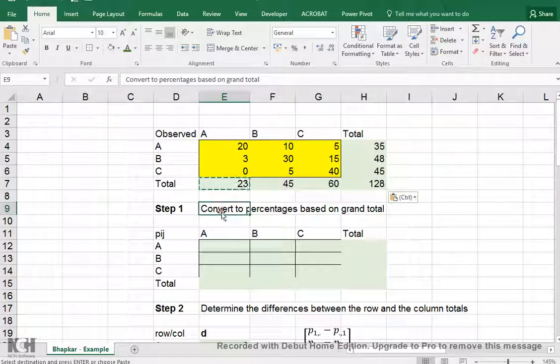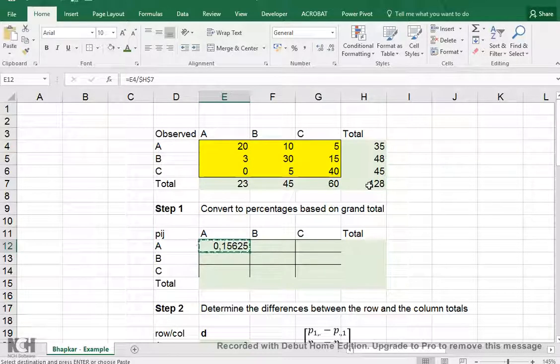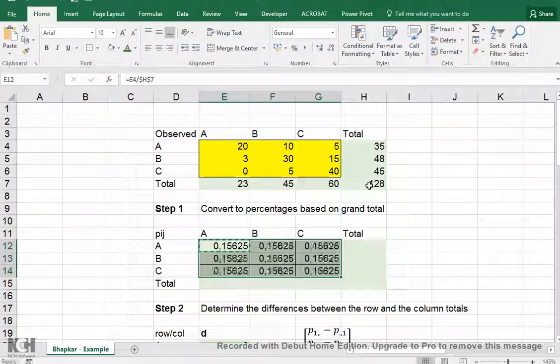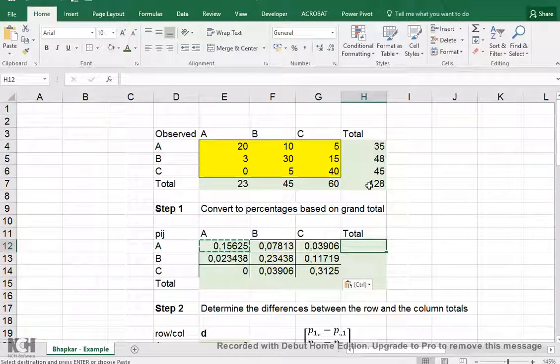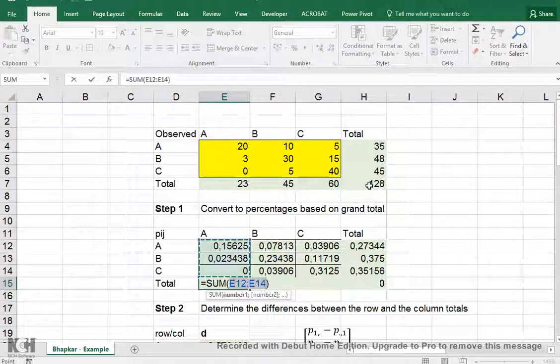The first real step is to convert everything to percentages, which means I take this 20 and divide it by the grand total of 128, and I want them all to be divided by 128, so press F4 to add the dollar signs. I can then copy-paste and add the totals again, and then we're done with the first step, which probably is one of the easiest ones.